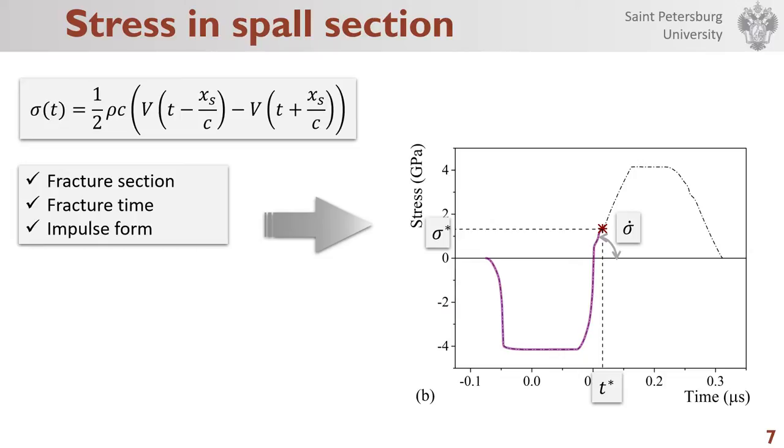And the solid line is stress that material can withstand. Fracture occurs at time t asterisk. Thus, we can obtain the ultimate stresses and tensile stress rate. This data will allow us to build dynamic stress dependence for experiments.